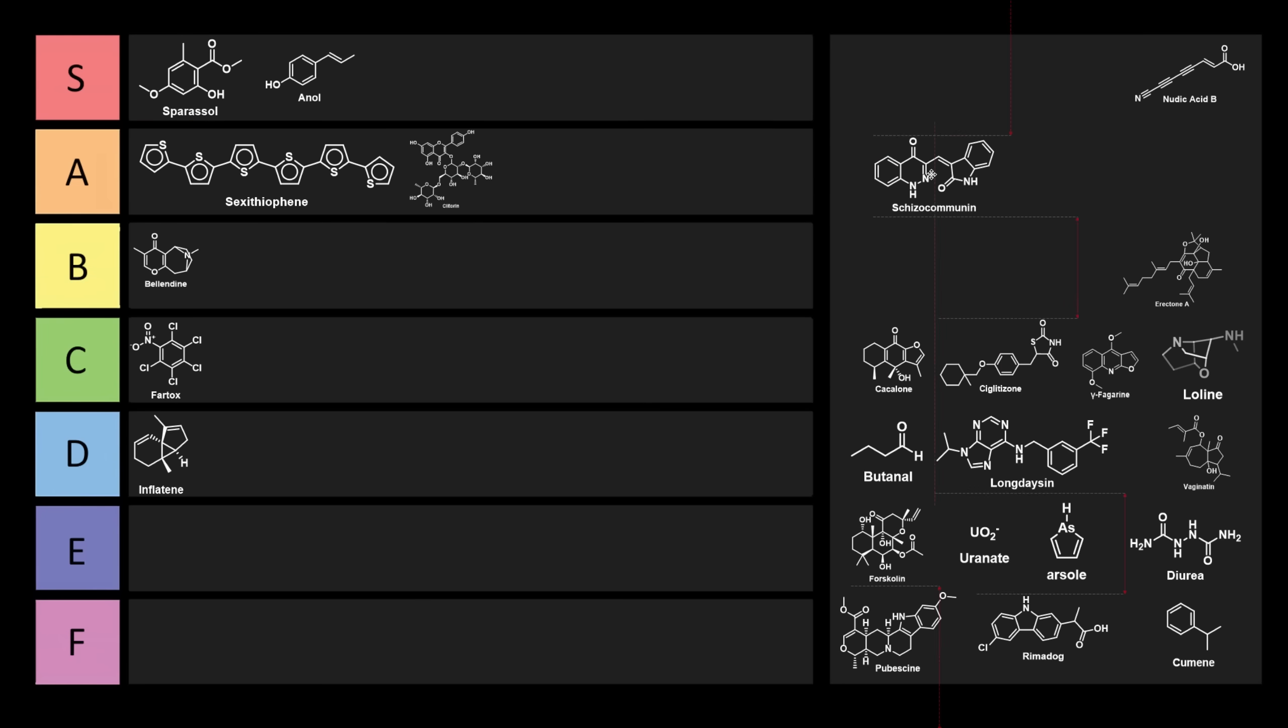Here we have schizocommunin. So schizocommunin is kind of cool. Schizocommunin comes from a fungus known as schizophyllum commune. So schizocommunin is kind of an interesting one. I don't know how unfortunate it is. It's definitely entertaining. But because we're looking at unfortunate, I think this one can probably go into E tier. Even though I have some voices in my head telling me it belongs at a different tier.